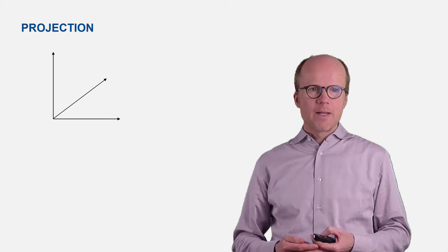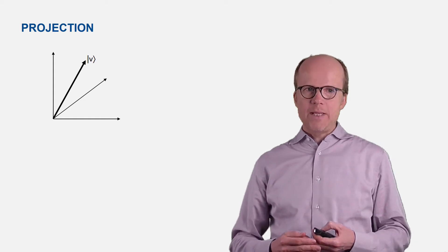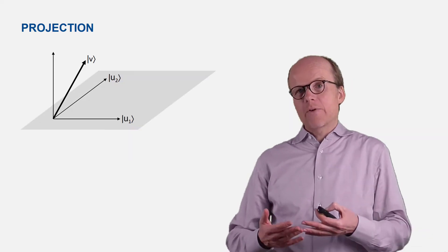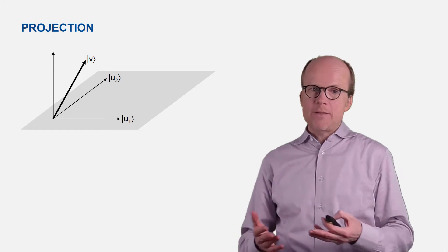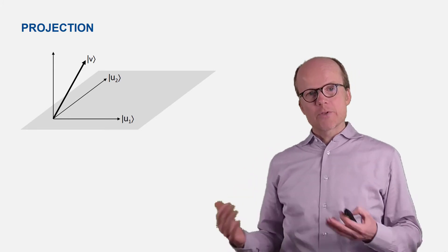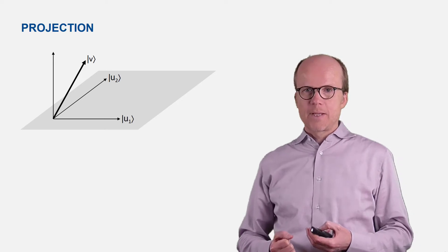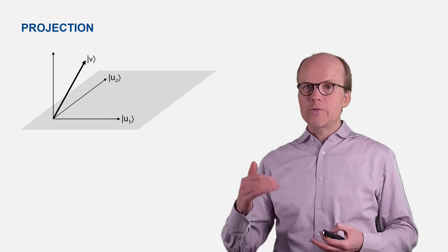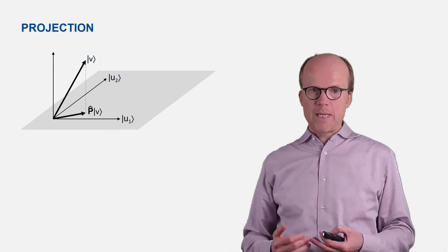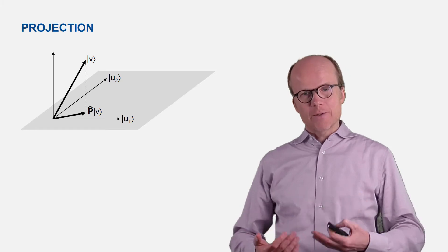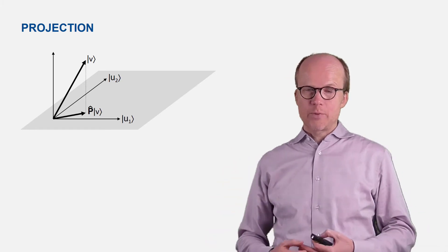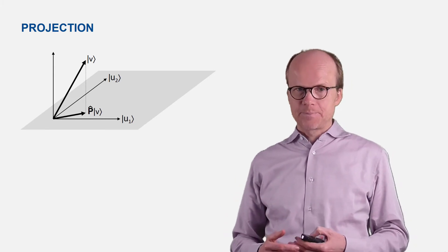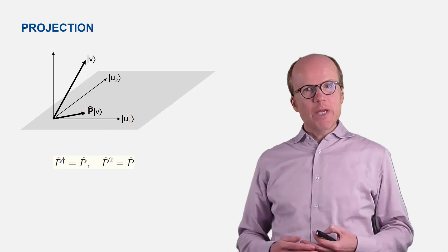To visualize the concept of projection operators, imagine you have a vector V in three-dimensional physical space, and you have a two-dimensional plane spanned by two vectors u1 and u2. Then you can have an orthogonal projection of V onto that two-dimensional plane, and the operator which effects this orthogonal projection is called a projector or projection operator P.